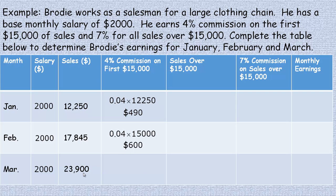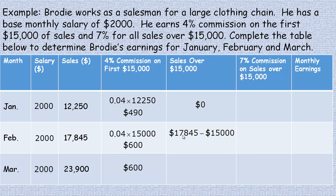For March he's quite a bit beyond fifteen thousand, so the four percent portion is also six hundred dollars. Both February and March are past fifteen thousand dollars in sales, so they're the same in that column. For the sales over fifteen thousand column: January had no sales over fifteen thousand so we put zero there. For February, subtracting fifteen thousand from seventeen thousand eight forty five gives two thousand and forty five dollars — that's what he earns the seven percent on.